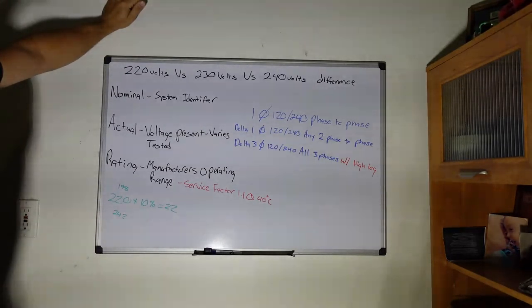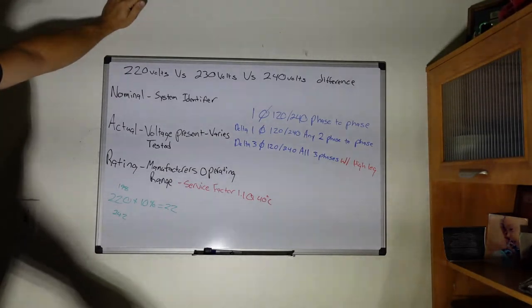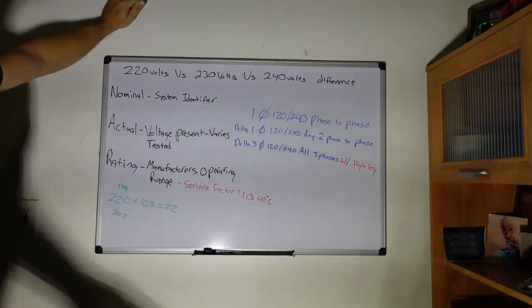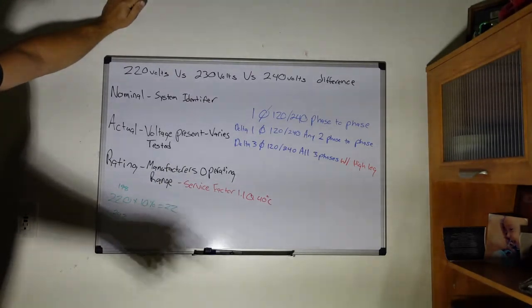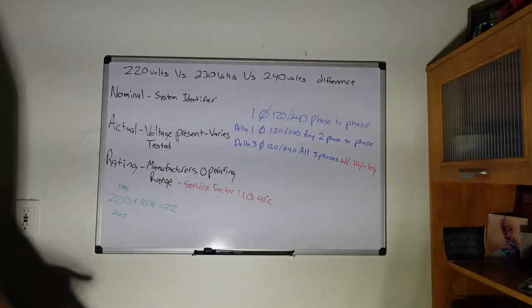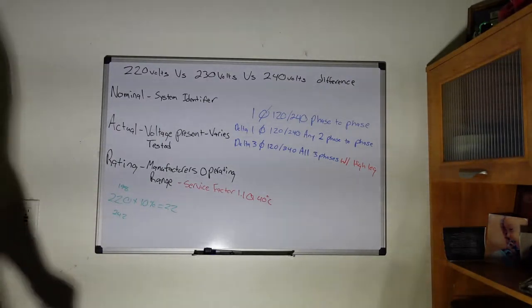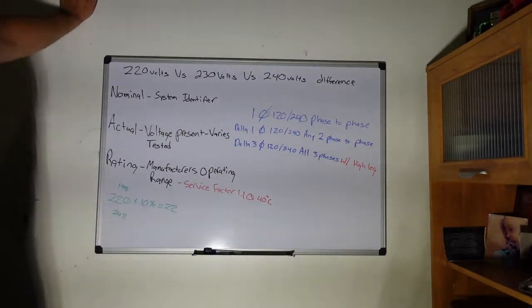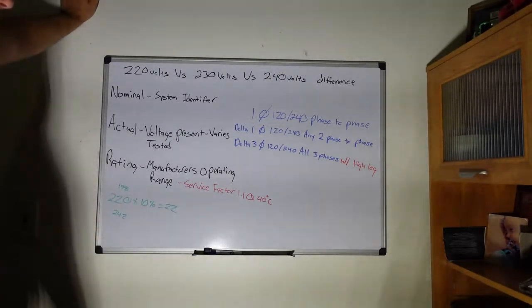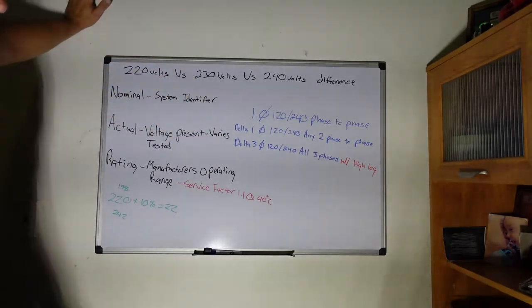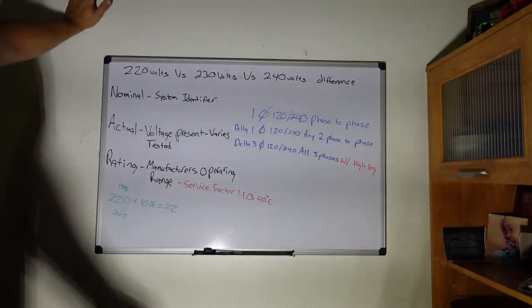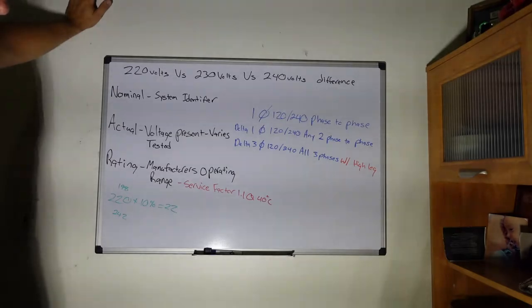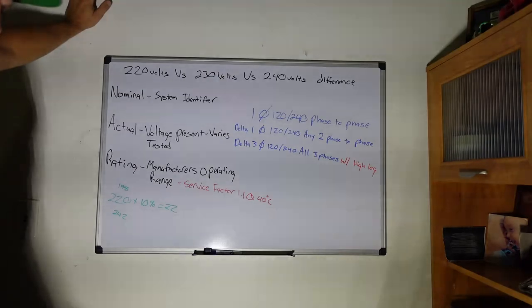Now when I say phase to phase, I mean there needs to be a load in between that, not just hook them up phase to phase, because you will get 240 but you'll also get a direct short and you can do lots of damage. The other way to get 240 is on a delta three-phase 120/240 system, which will use all three phases with the high leg, all of them included, to get you that three-phase 240 power. Of course, with a load on it, because if not, big problems.